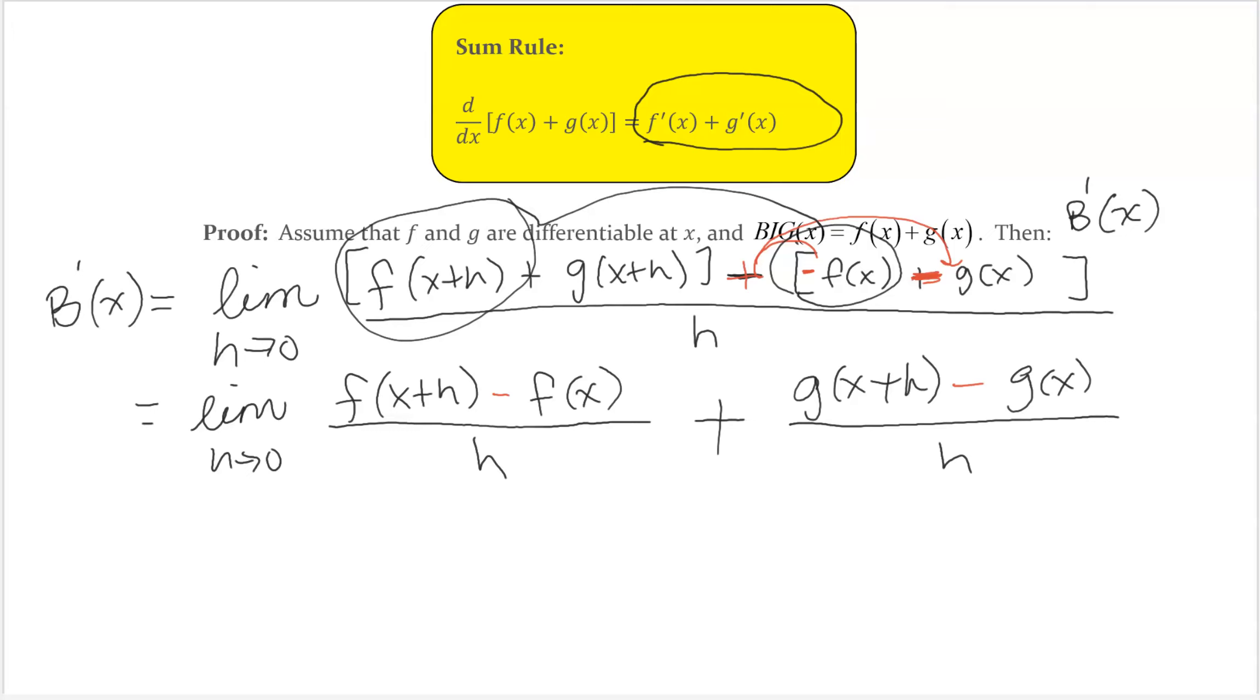So do you see how a little algebra there? I am rewriting them, separate them in terms of they had a common denominator, I separate them in the sum. Now I'm going to take the limit of h go to 0.